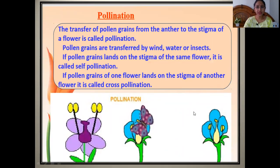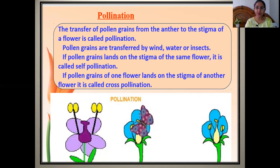Before going into the details of modes of pollination, you should know the definition of pollination and the mechanism of pollination. Pollination means the transfer of pollen grains from anthers to the stigma of a flower. It can be on the same flower or on different flowers.